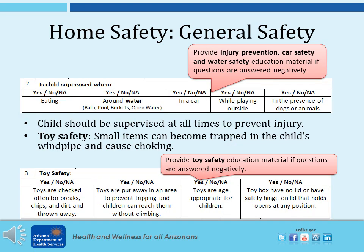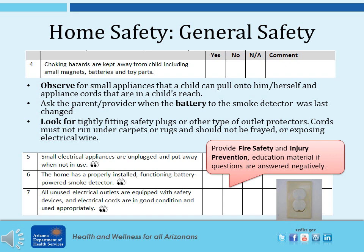The next question is about child supervision. Children should be supervised at all times to prevent injury. Provide injury prevention, car safety, and water safety education material if this question is answered negatively. The next question is about toy safety — provide toy safety education material if any of these questions are answered negatively, as small items can be trapped in a child's windpipe and cause choking. Question 4 is about choking hazards such as small magnets, batteries, and toy parts. The next questions cover small electrical appliances, a functioning battery-powered smoke detector, and electrical outlets and cords. Observe for small appliances a child can pull on, ask when the smoke detector battery was last changed, and look for tightly fitting safety plugs. Cords must not run under carpets or rugs and should not be frayed or exposing electrical wire.